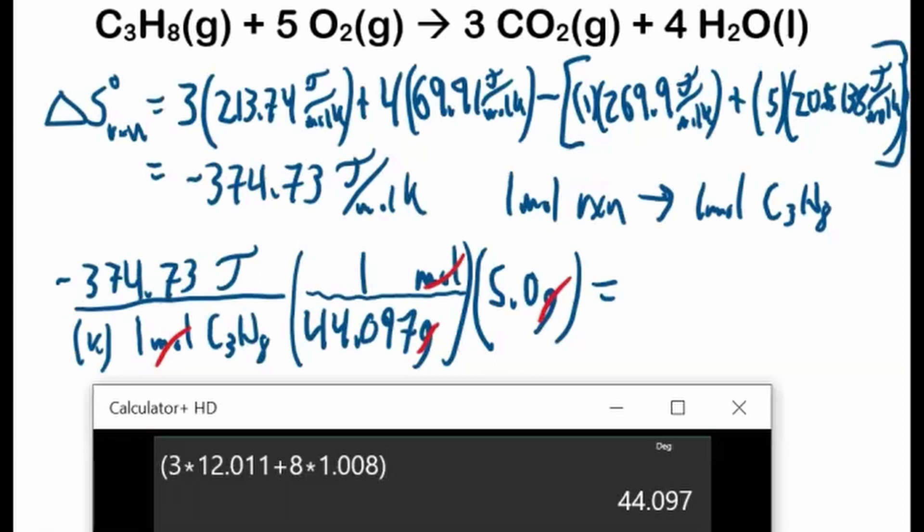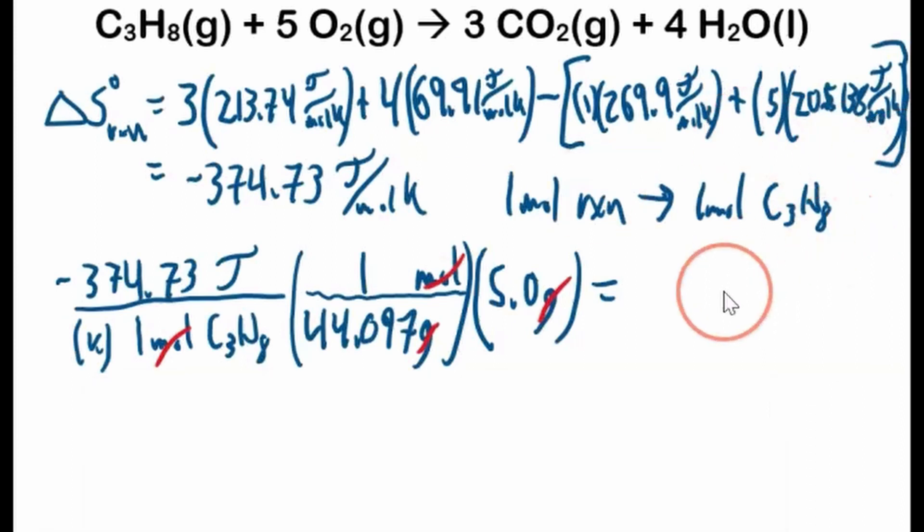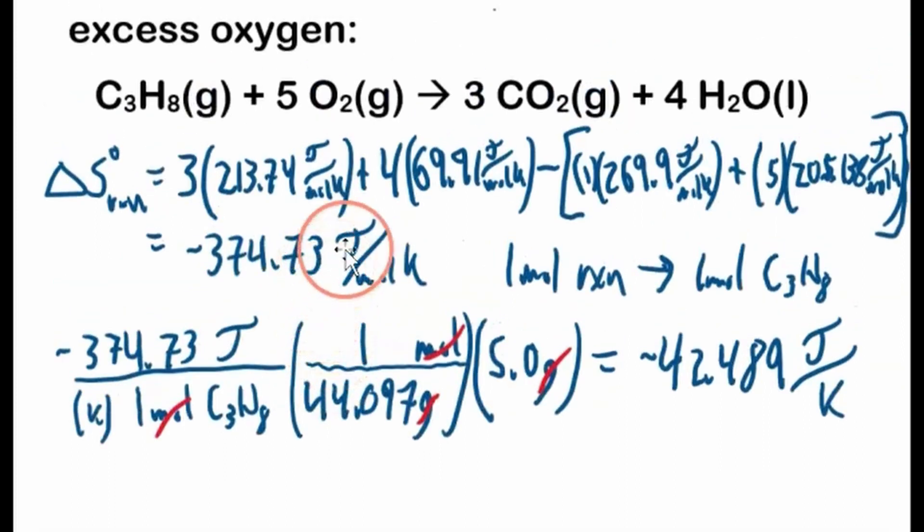Okay, so I'll delete that, I'm not sure how to use that previous answer in my calculator, so I'll just type it out again. Negative 374.73 divided by 44.097 times 5 is negative 42.489, so negative 42.489 joules per, not per mole kelvin, it's like instincts, joules per kelvin.